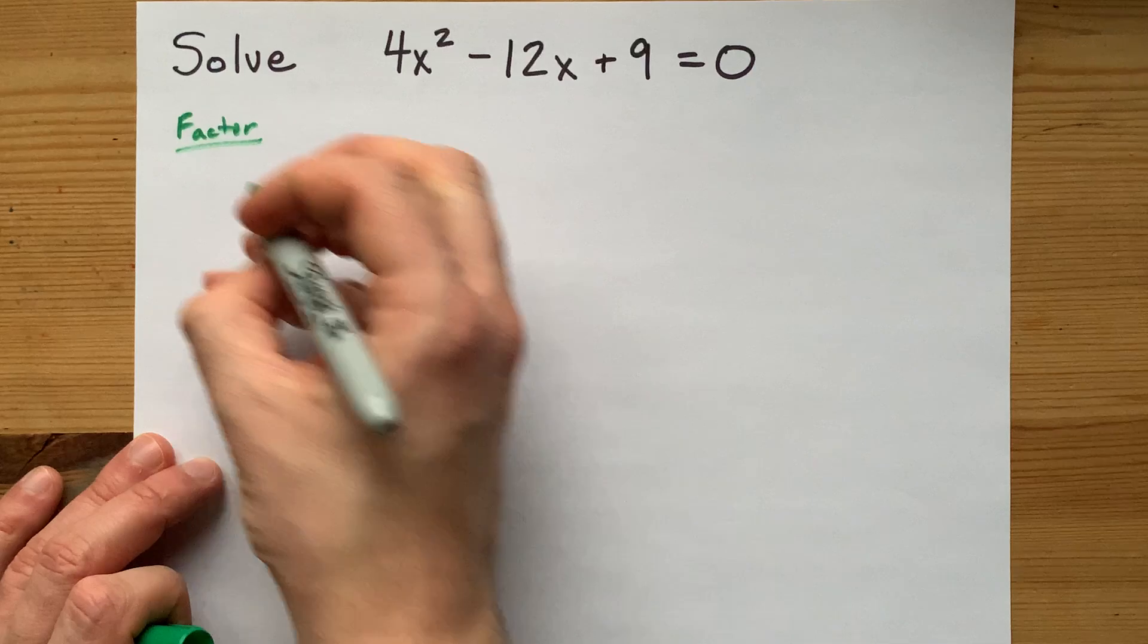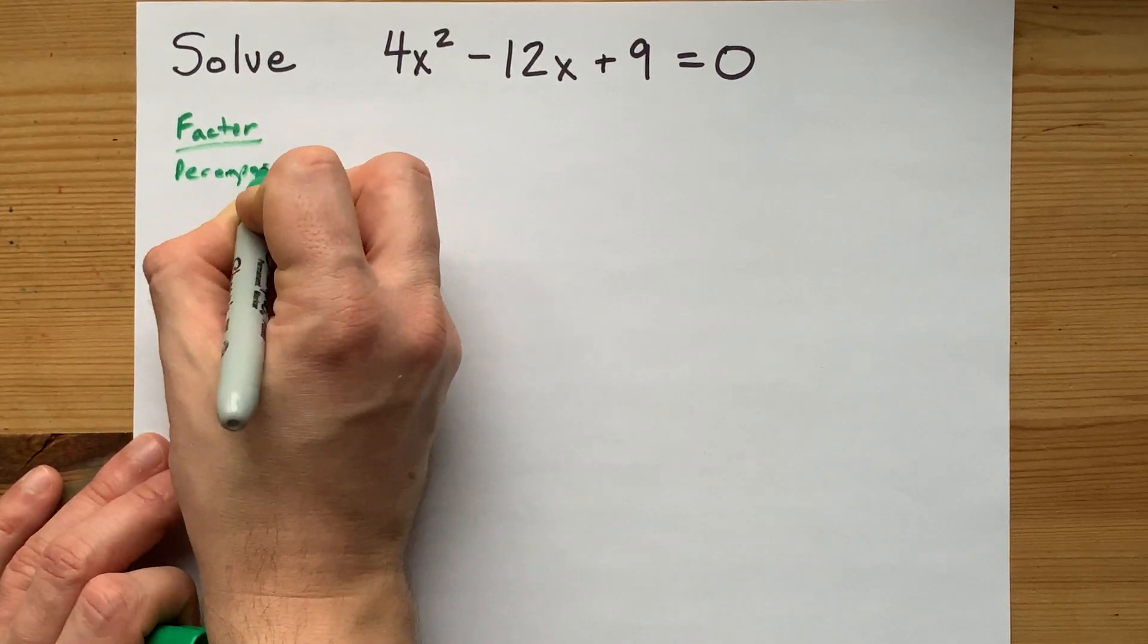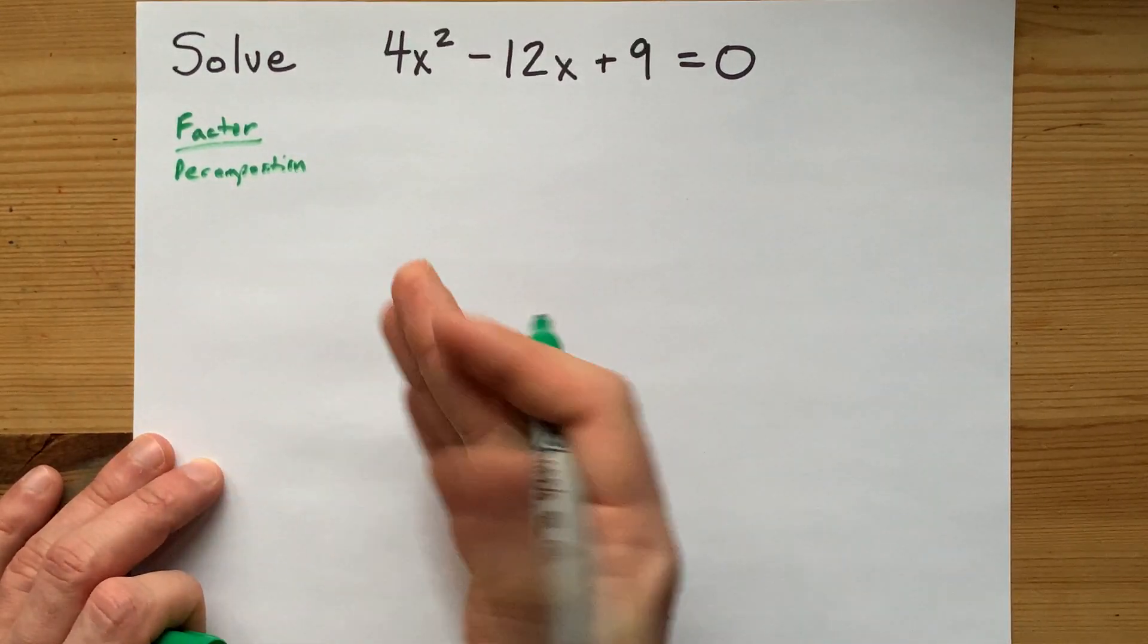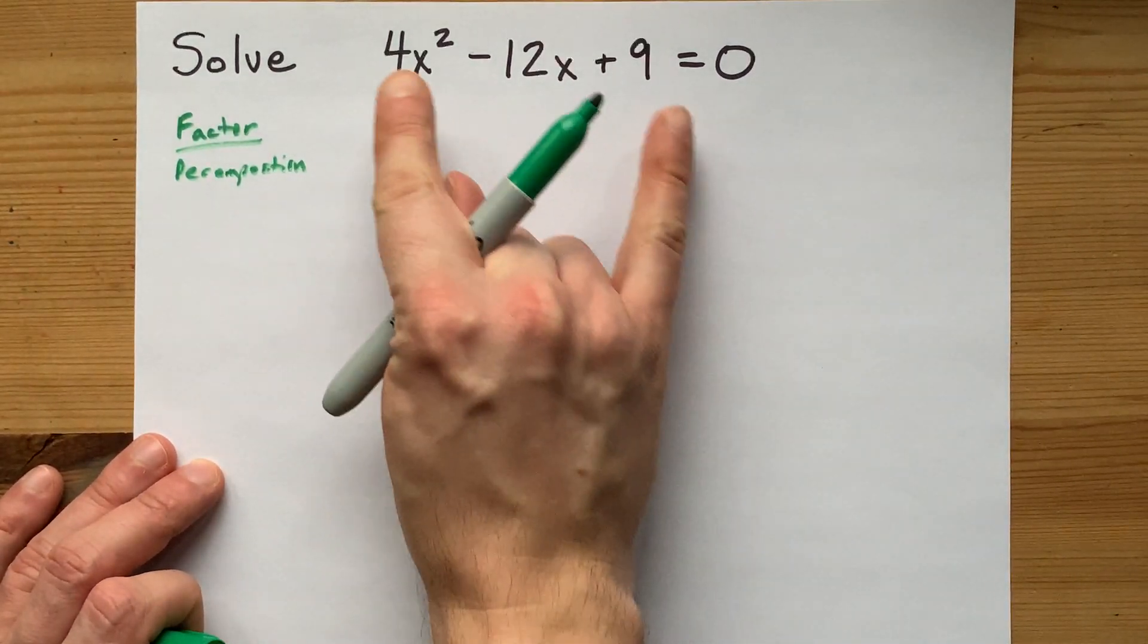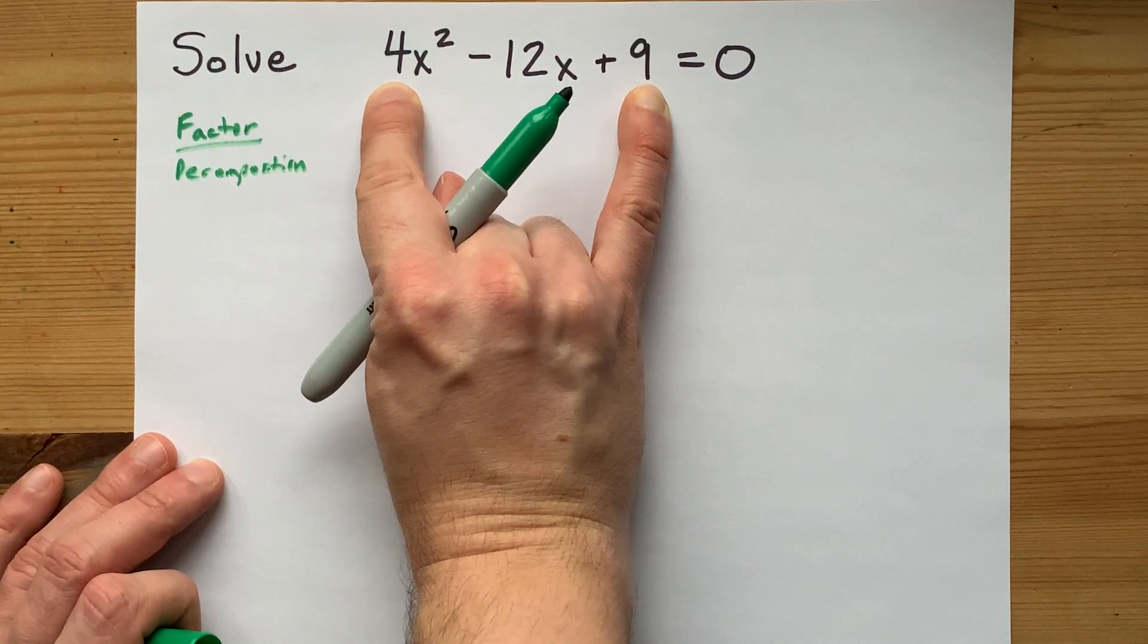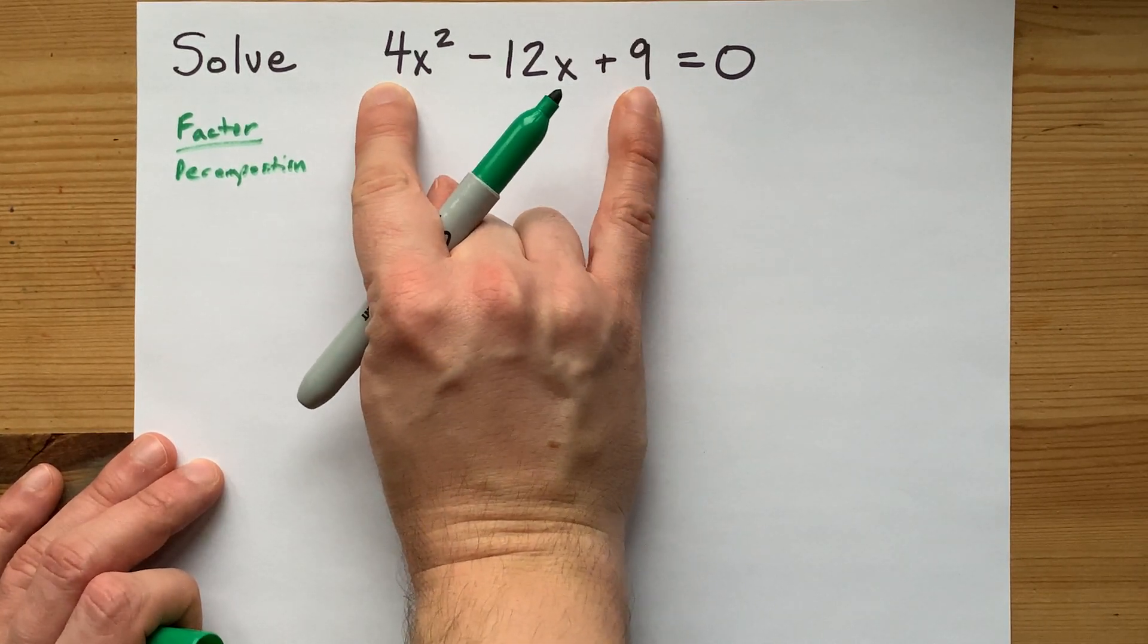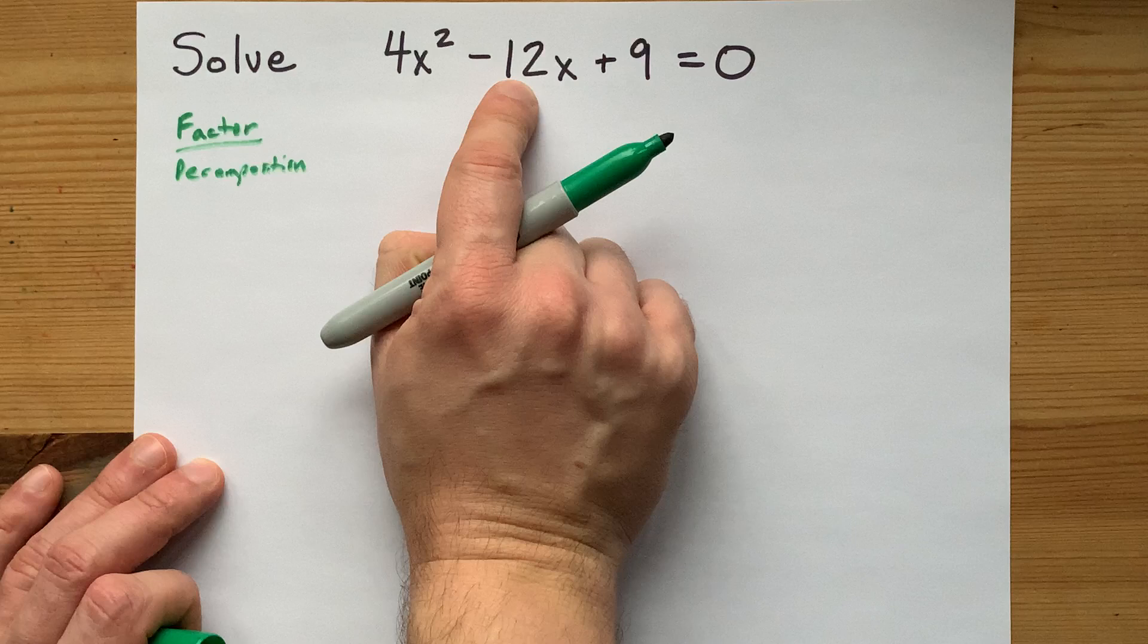There's a long way of factoring called decomposition, and I'm going to do that here for you, although there is a shortcut that applies here called difference of squares. I'm looking for two numbers that multiply to 36. That's 4 times 9.